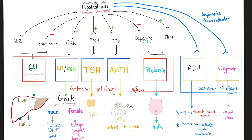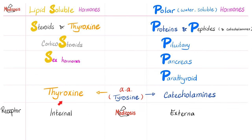The hypothalamus secretes thyrotropin-releasing hormone — to release the thyrotropin, which is TSH. Thyroid stimulating hormone, also known as thyrotropin, is going to go and stimulate the thyroid. Now the thyroid is going to secrete thyroid hormone — T3 and T4. Don't forget that thyroxine, or thyroid hormone, is part of the lipid-soluble family as we have discussed before.